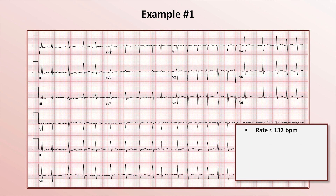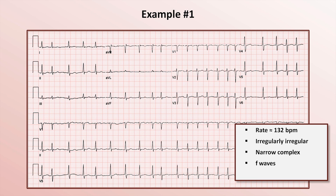What is the regularity? It is irregularly irregular. Are the QRS complexes narrow or wide? They are narrow. What is the atrial activity? There are no P-waves or flutter waves, just small amplitude undulations in the baseline — these are fibrillation waves, or F-waves with a lowercase f.